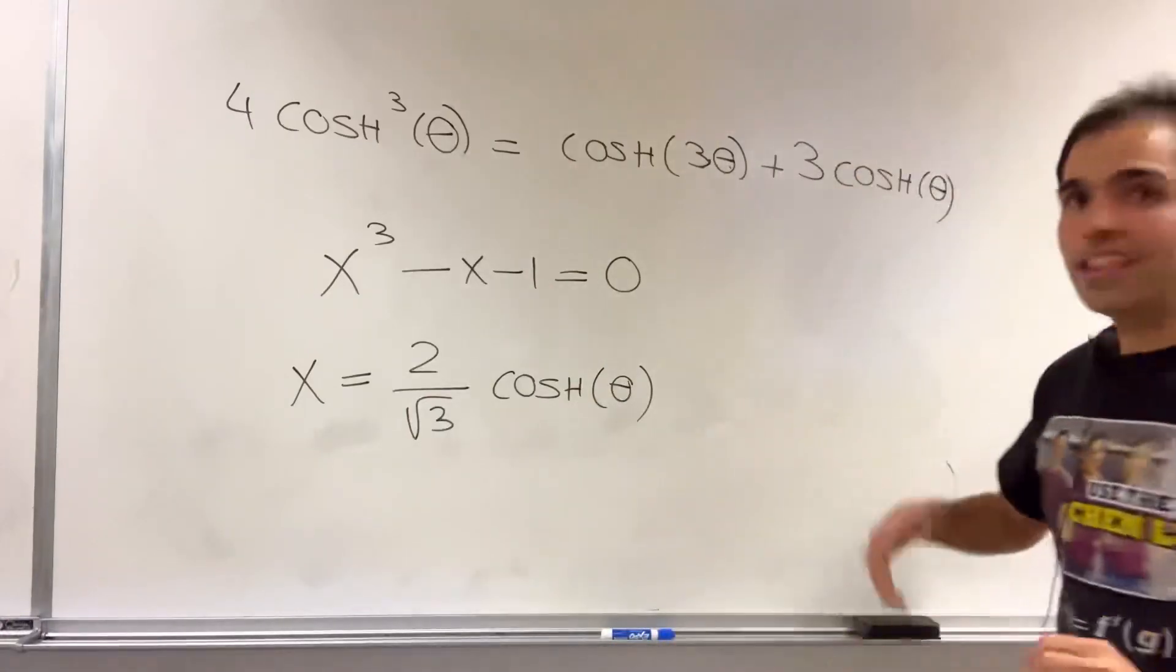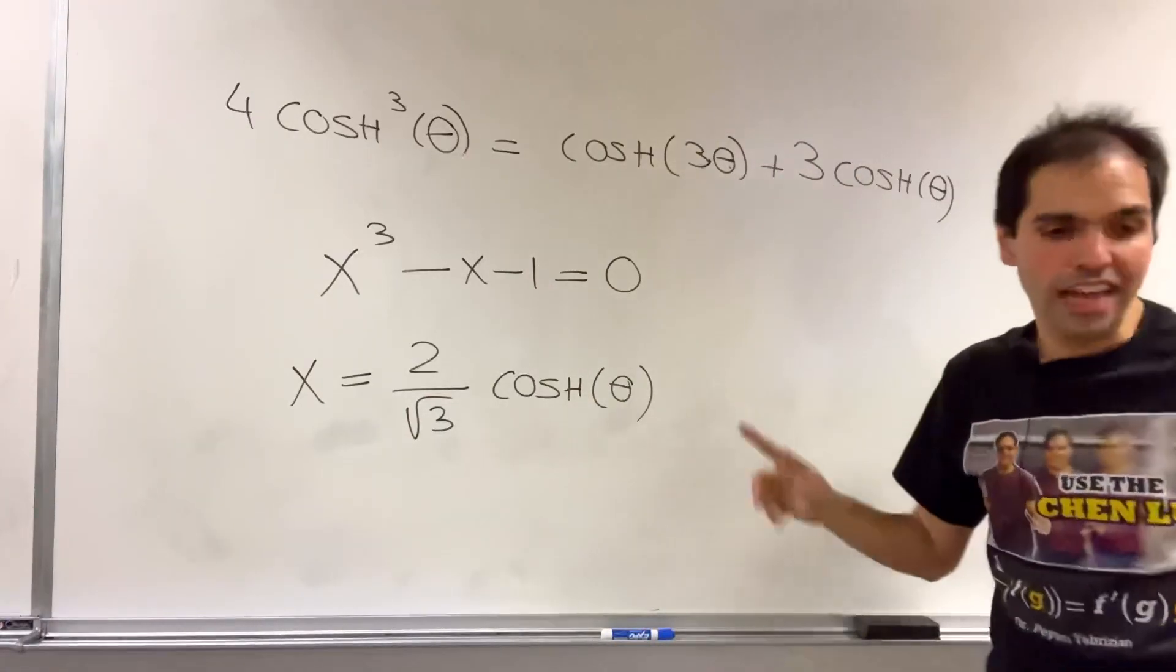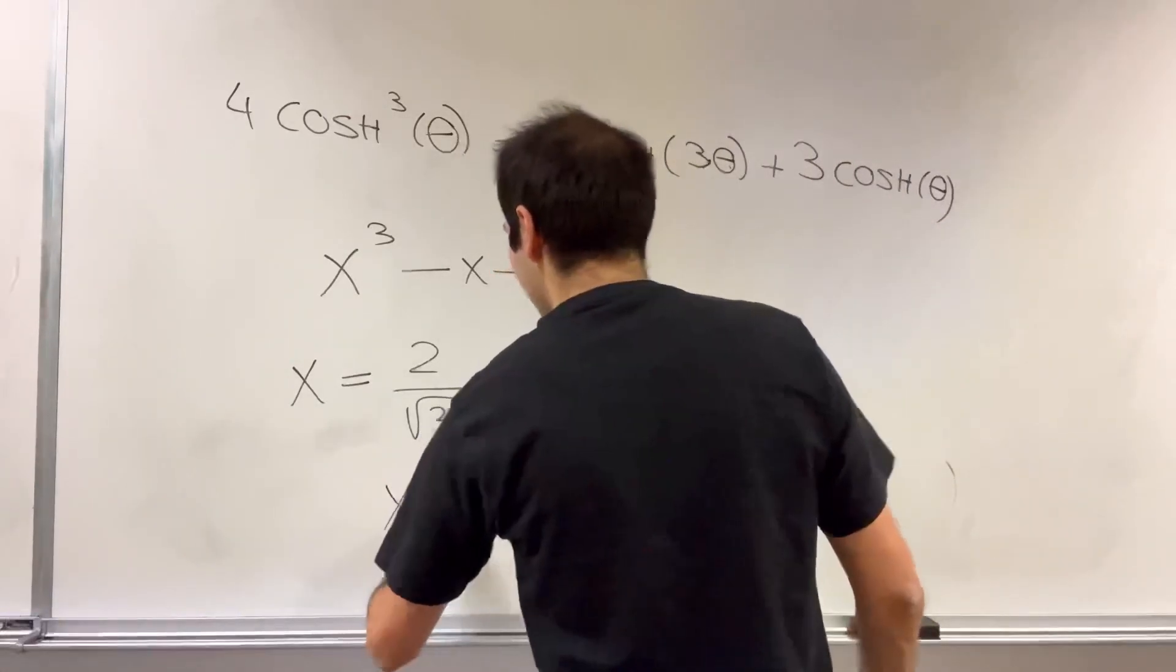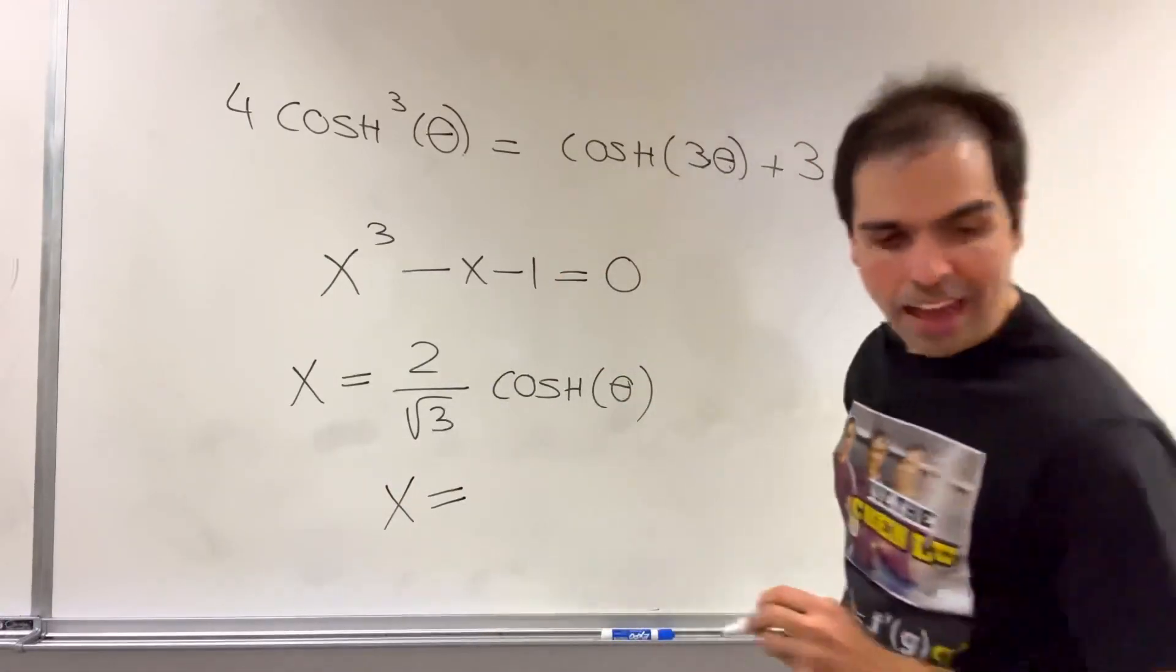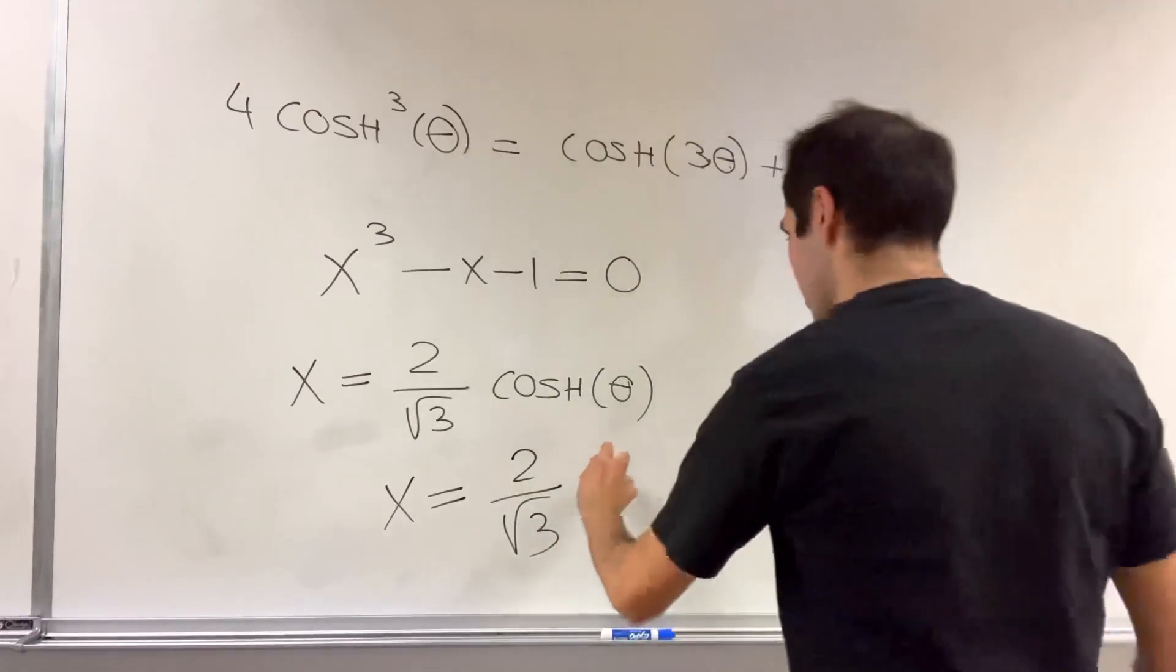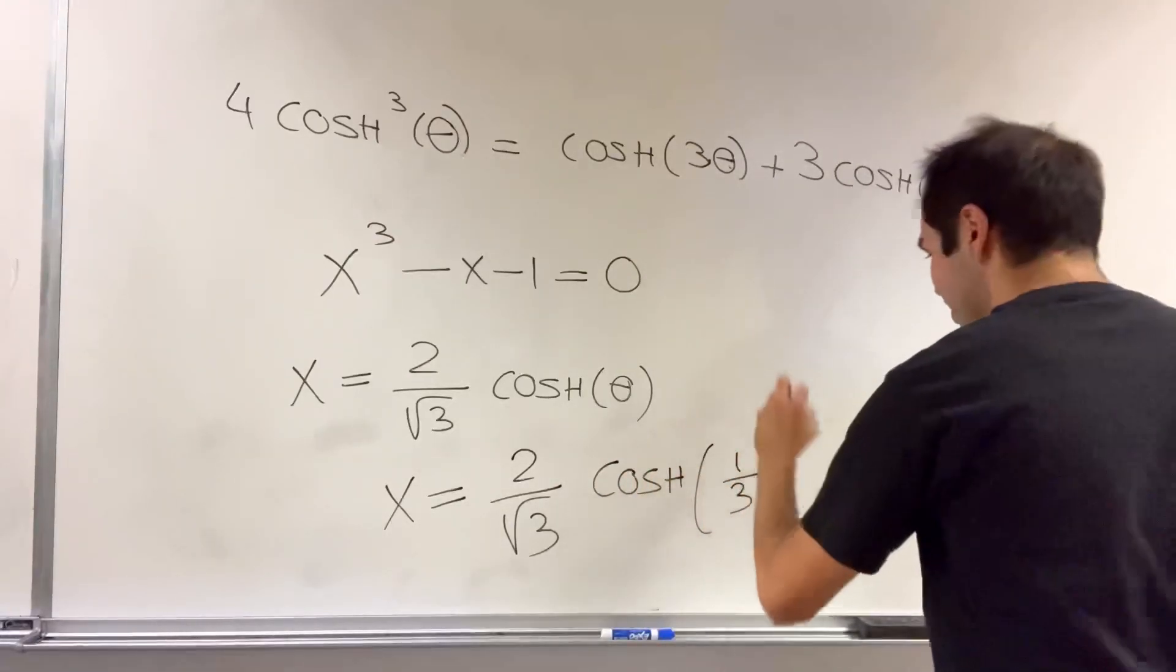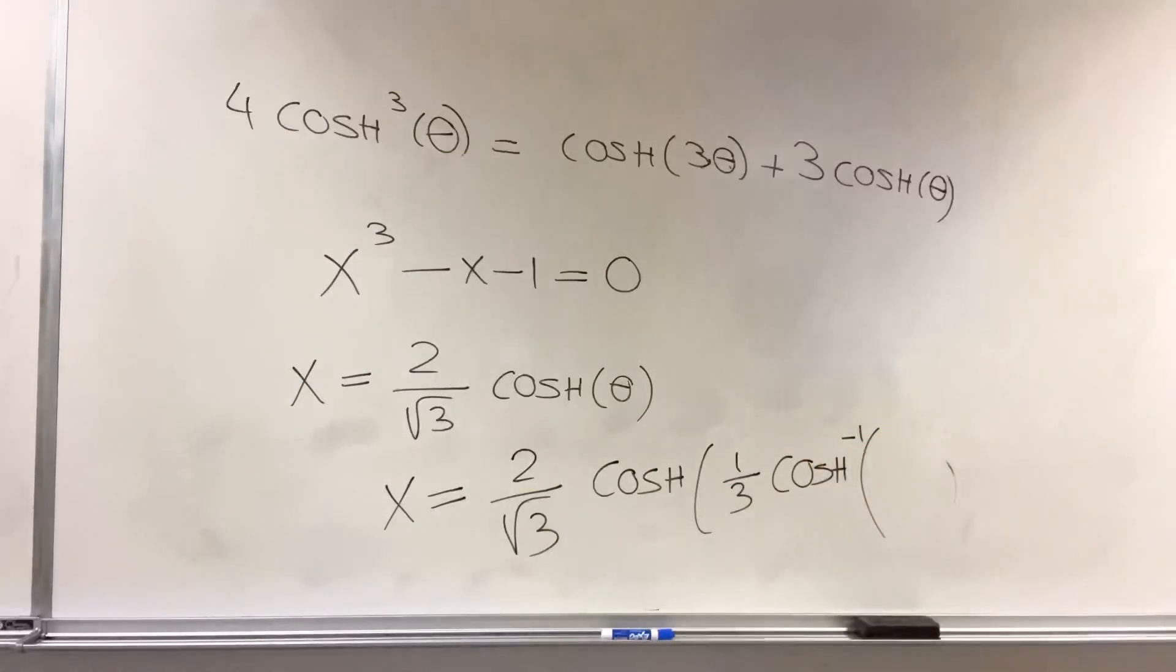then in that video I'm showing, using this identity, that we then get the following identity for the plastic ratio, namely x is 2 over square root of 3 cosh of one-third arc cosh, when do you hear that, of 3 square root of 3 over 2.